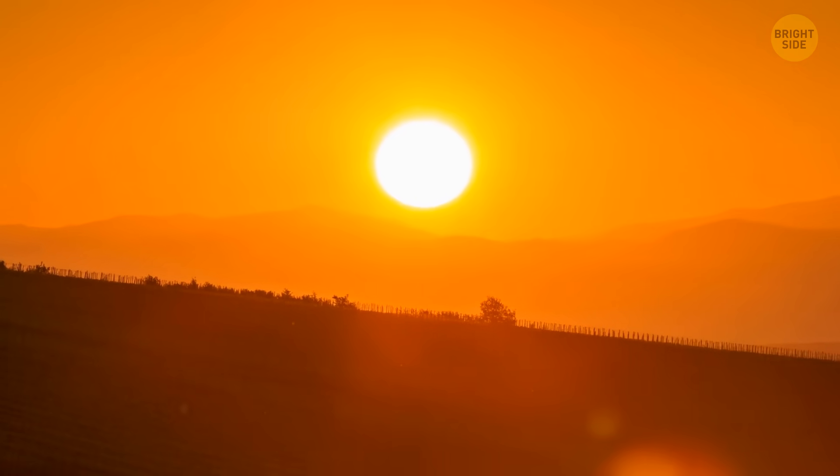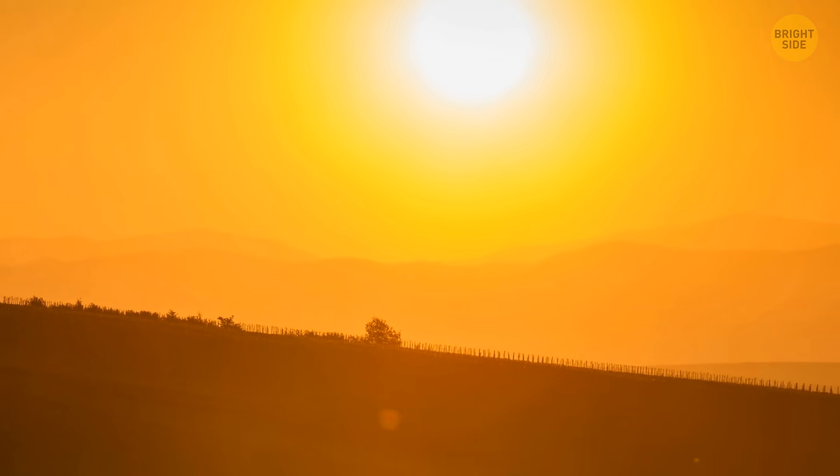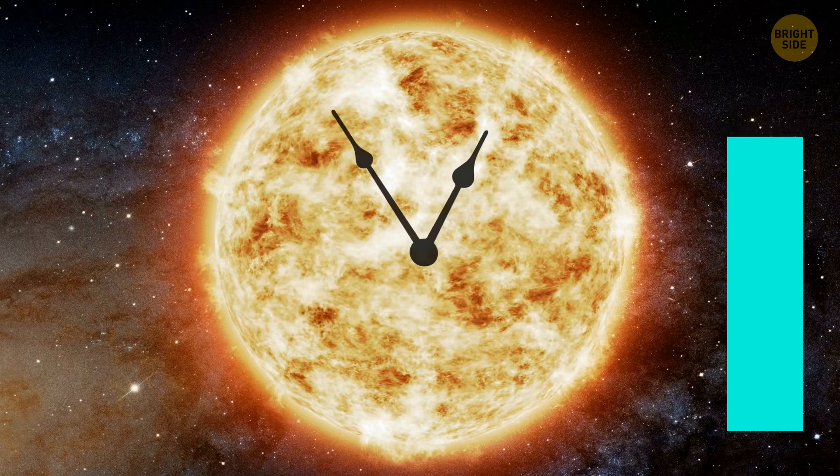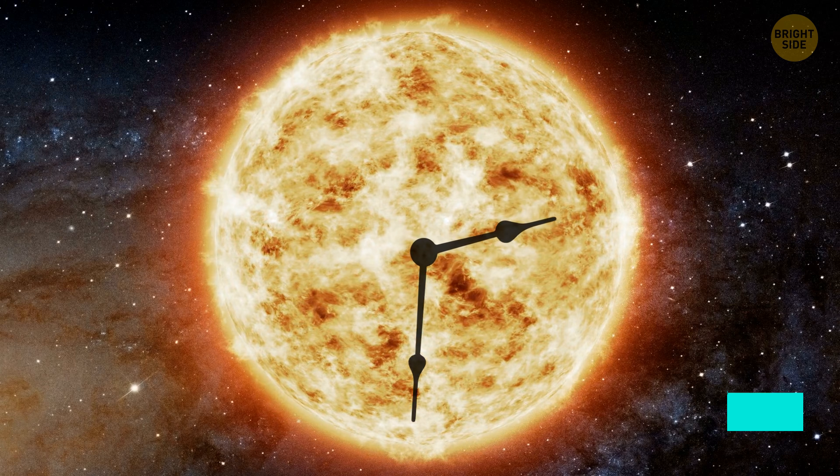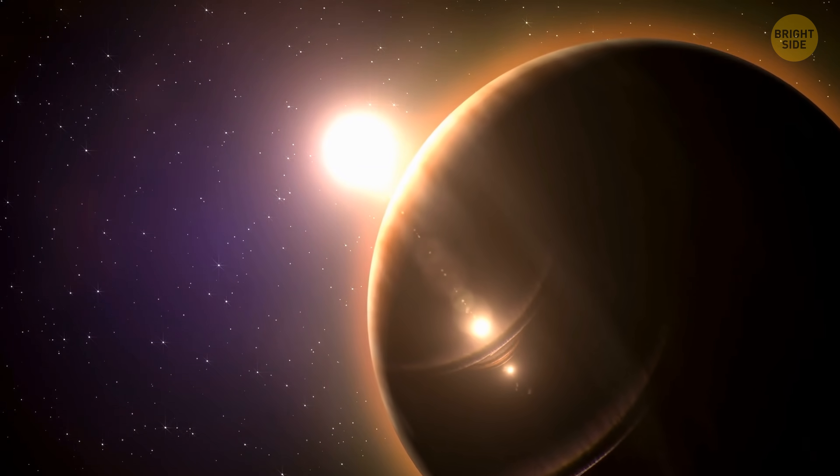So now you know how the sun works. Now what happens once it reaches the end of its life? Well, here's the twist. Our sun has a limited supply of hydrogen fuel. In about 5 billion years, it'll run out of its fuel. After that, the star will undergo some big changes.